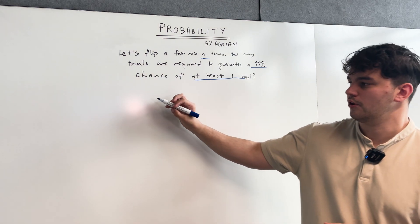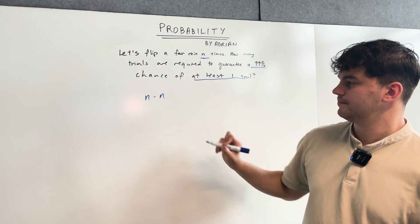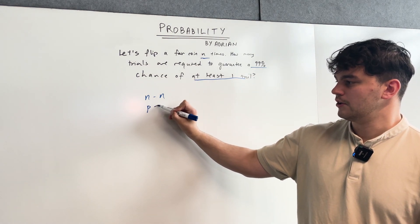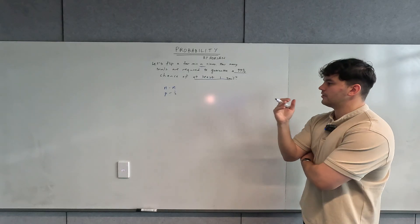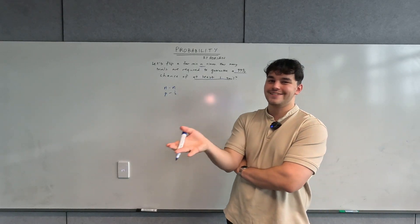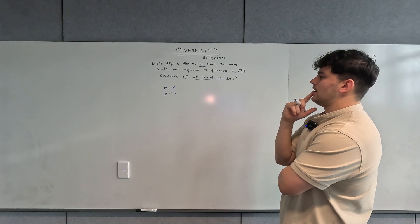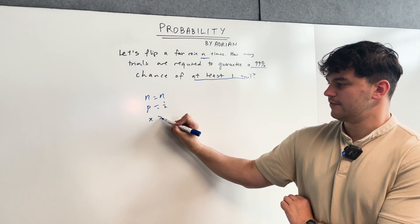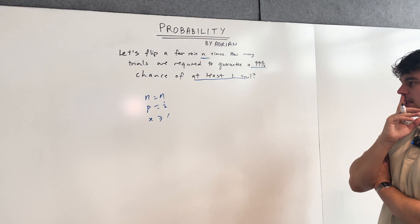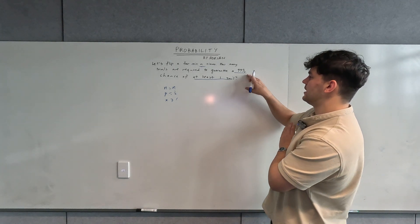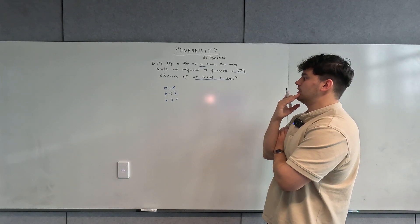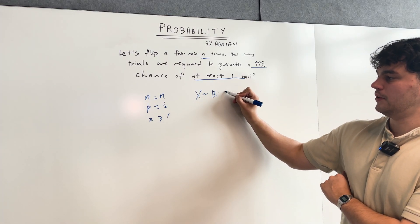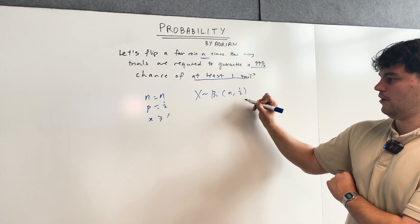We flip a coin n times, so we know the number of trials is obviously just n. The probability of success of any given trial is one half because we're focusing on tails — and it doesn't matter if we focus on tails or heads, the probability is the same. So n is equal to n, p is equal to one half, and x is greater or equal to one because we want at least one tail flip. X is binomially distributed with sample size n and probability of one half.